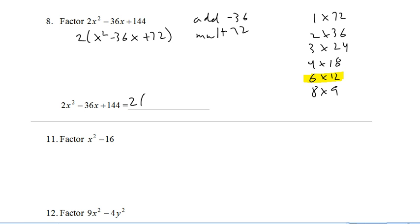If I want to get 36 or 18, I'm going to have to use 6 and 12. So I end up with 2 times x minus 6 times x minus 12. Again, notice if I were to multiply all of that through, I would end up with what I had in the beginning.